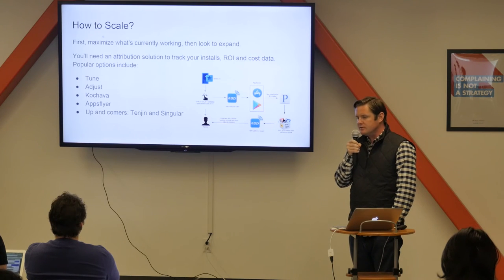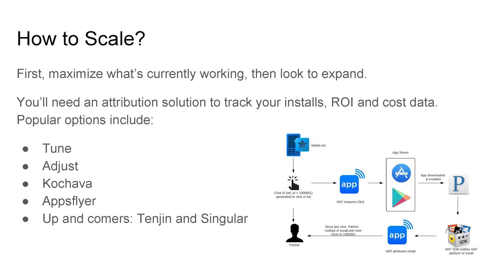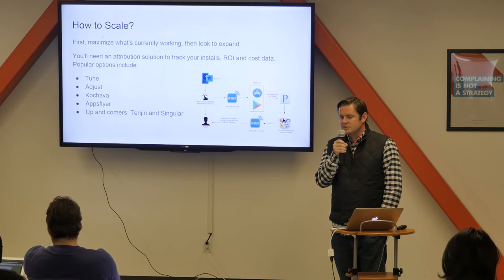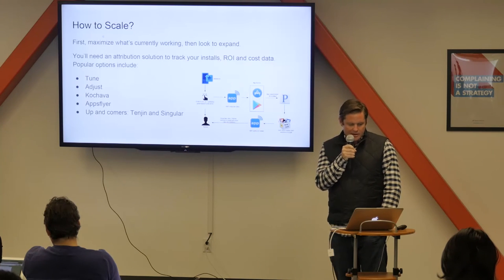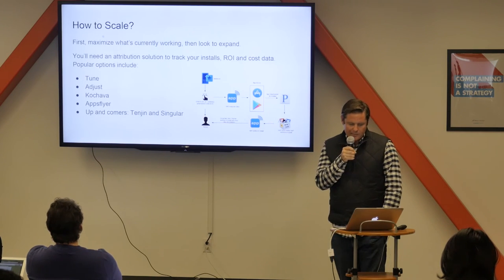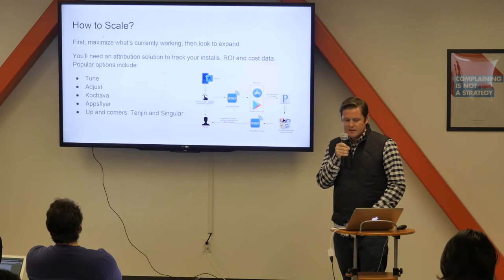Now, how to scale. Once you've mastered Facebook and Google, where you can spend hundreds of thousands of dollars a day, there are a lot of other platforms out there that could be meaningful for your business. If you're already hitting diminishing returns within Facebook and Google, it's worth considering others. First, you'll need a tracking provider — the names on the list include Tune, Adjust, Kochava, AppsFlyer, and some new up-and-comers like TenGen and Singular. They're all pretty good solutions. The first four are relatively proven. Take a demo of each and see which features matter most to your business. AppsFlyer may be a good thing to consider as you're thinking about ad networks outside of Facebook and Google.